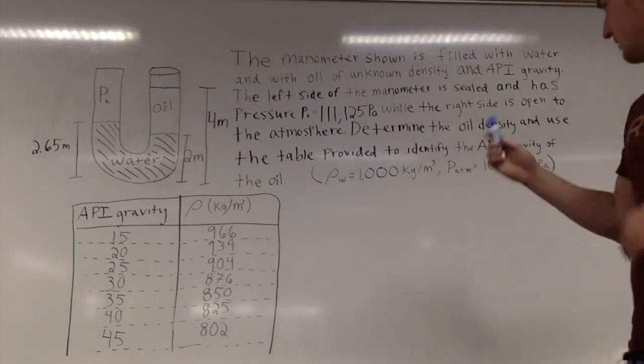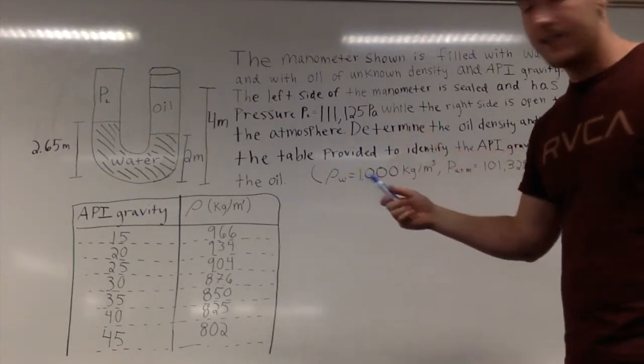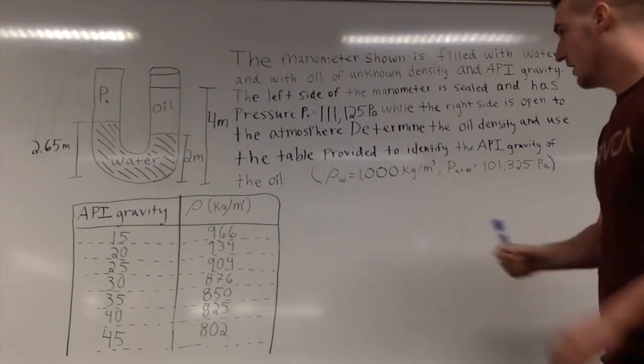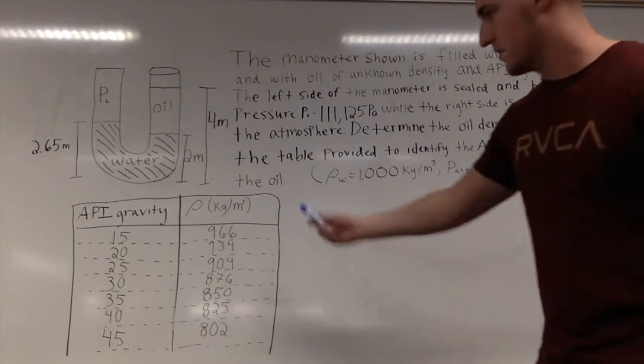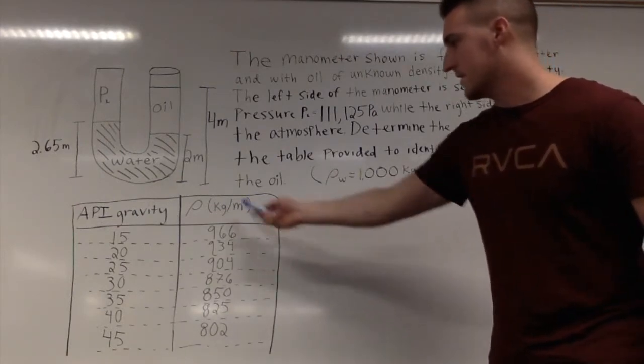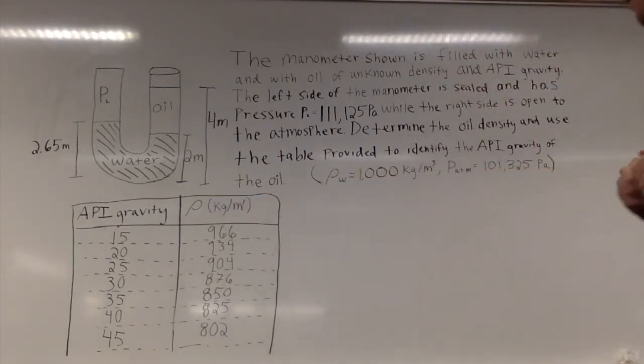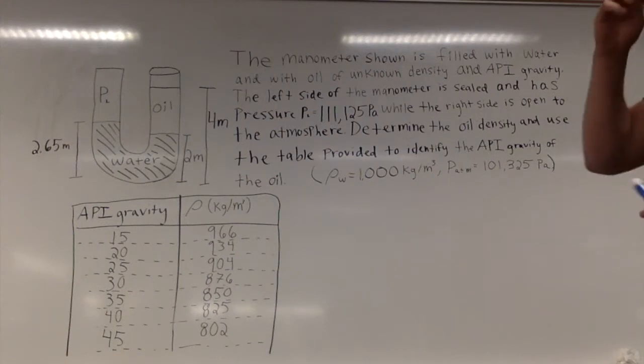So what we want to do is determine the density of the oil and then use this table to determine the API gravity. This is just a conversion chart between density and API gravity of oil.